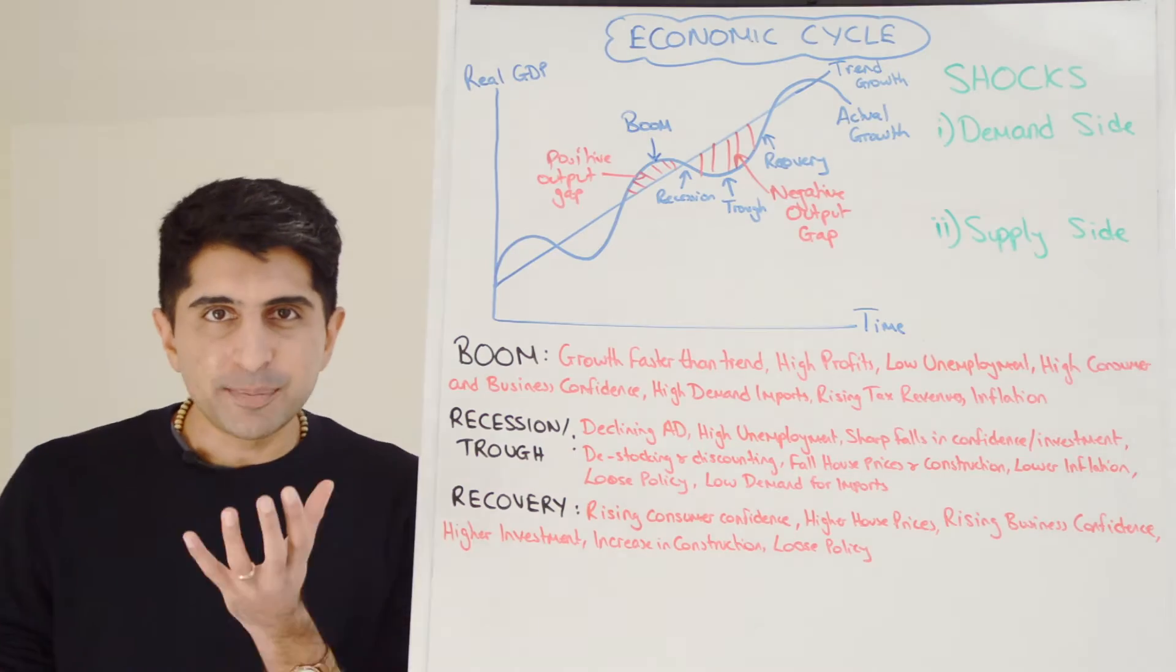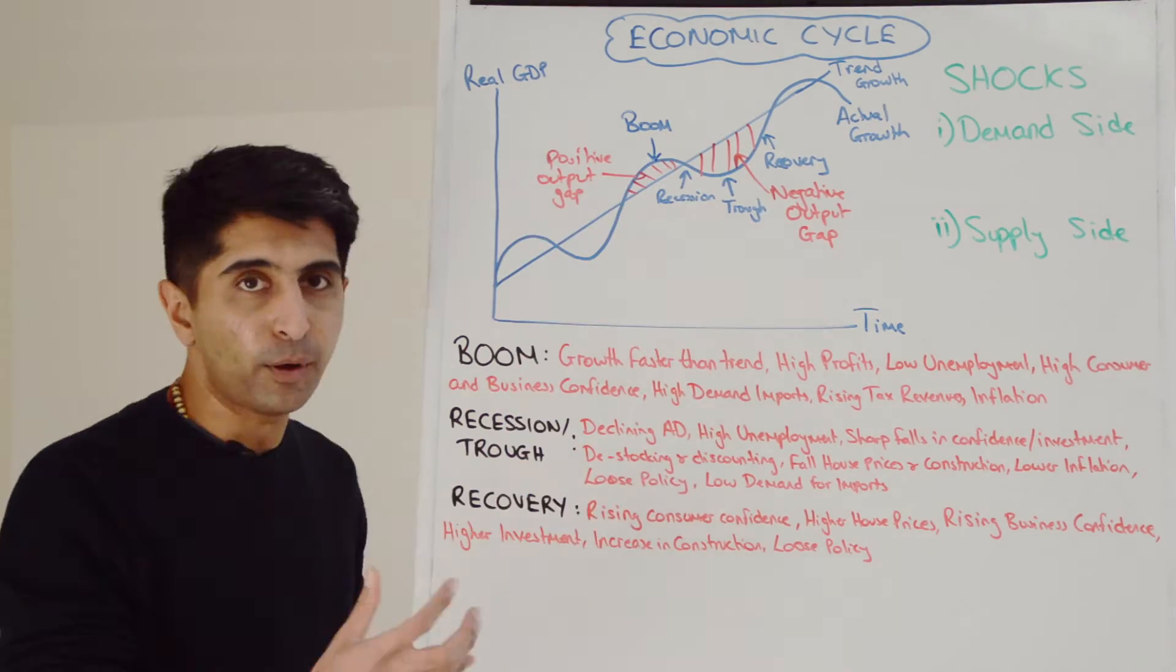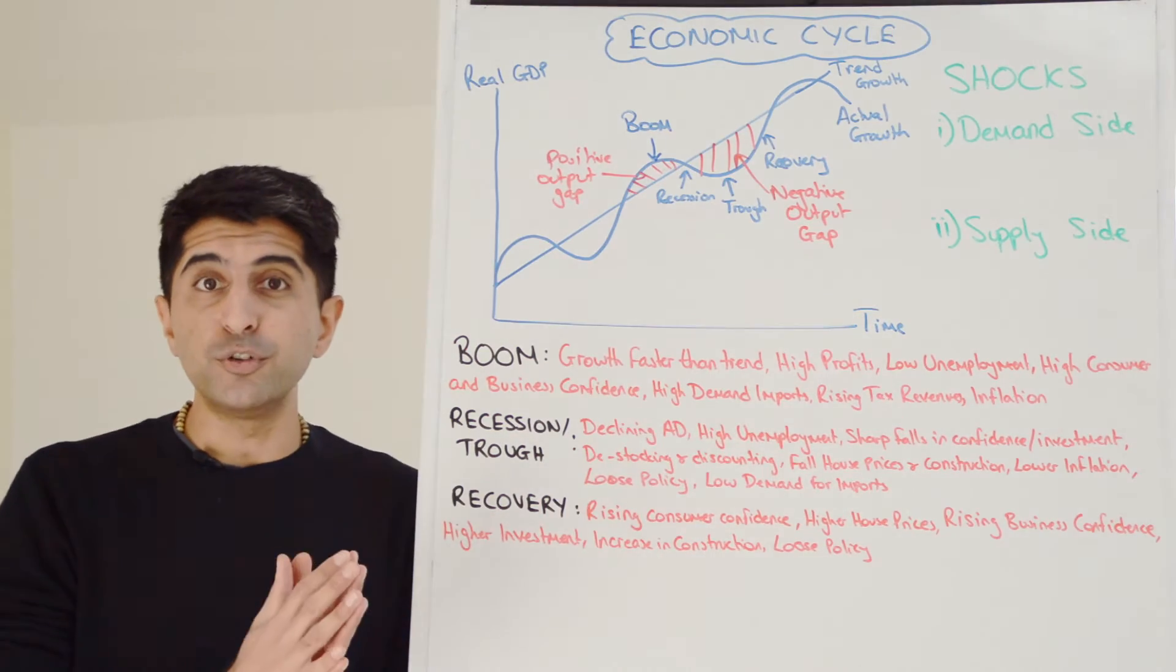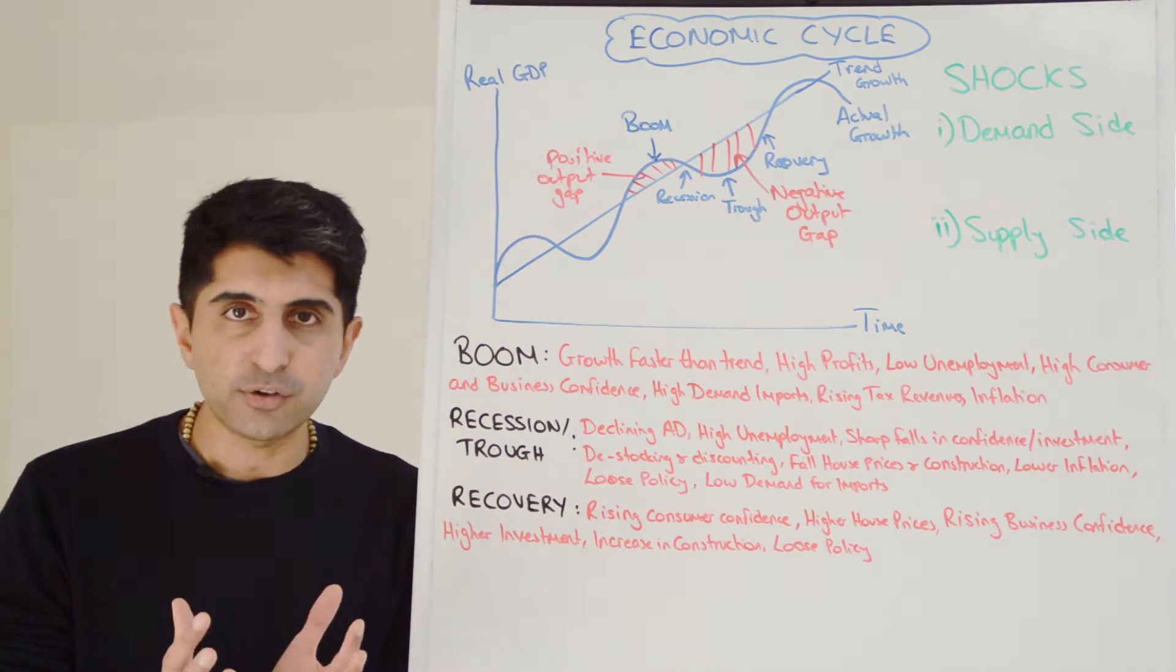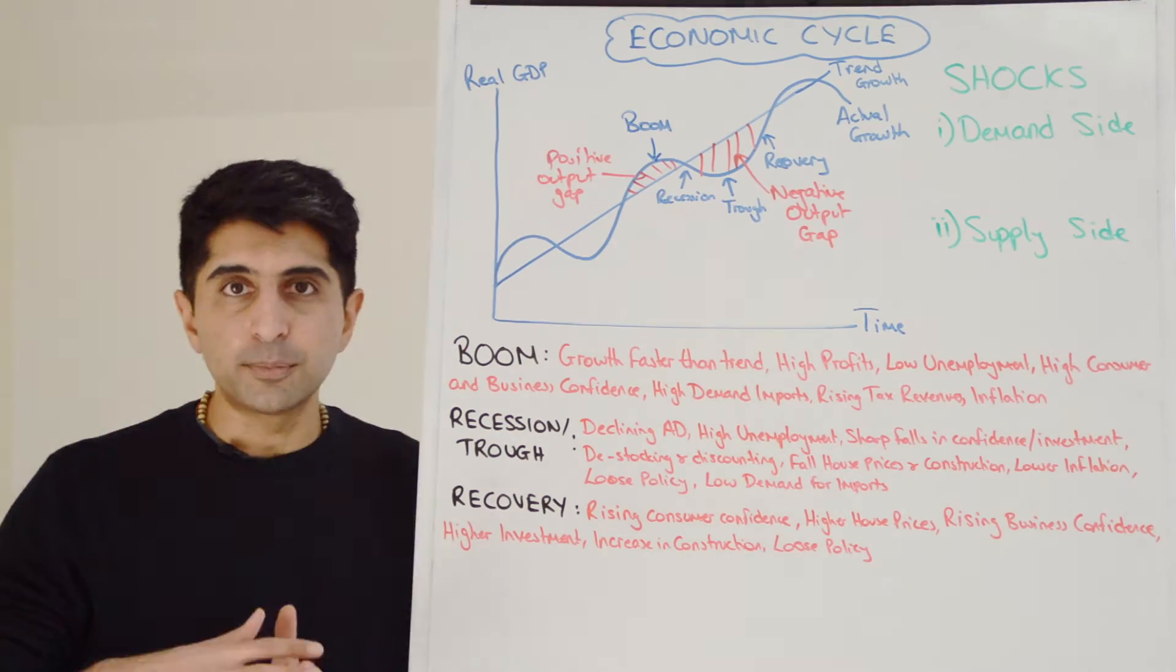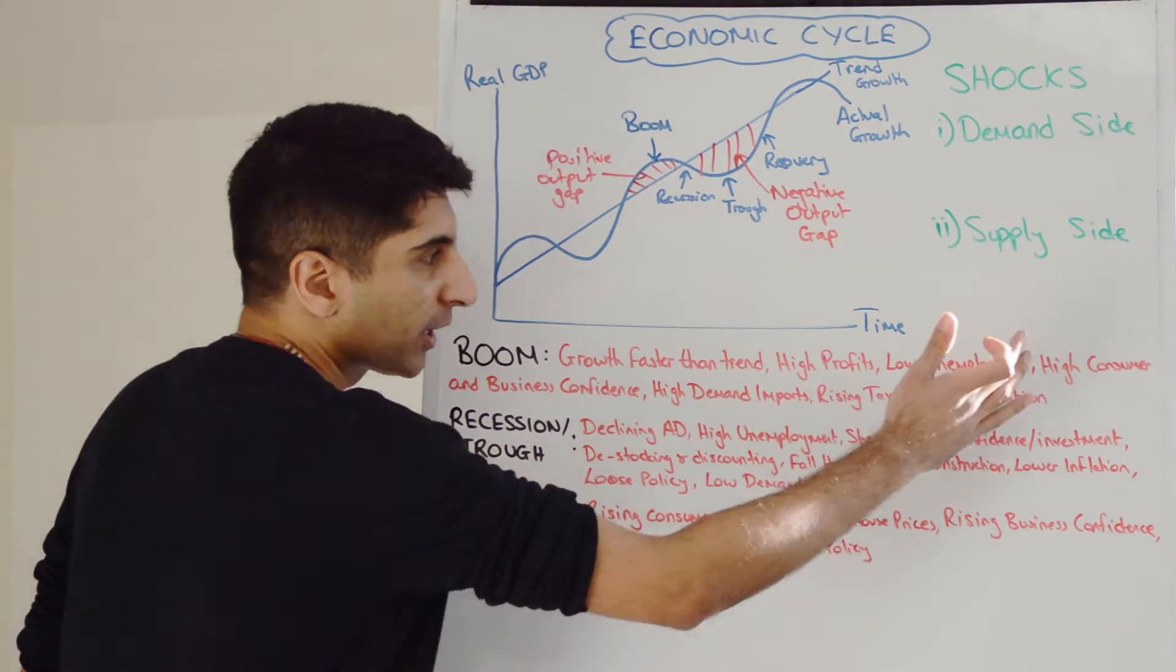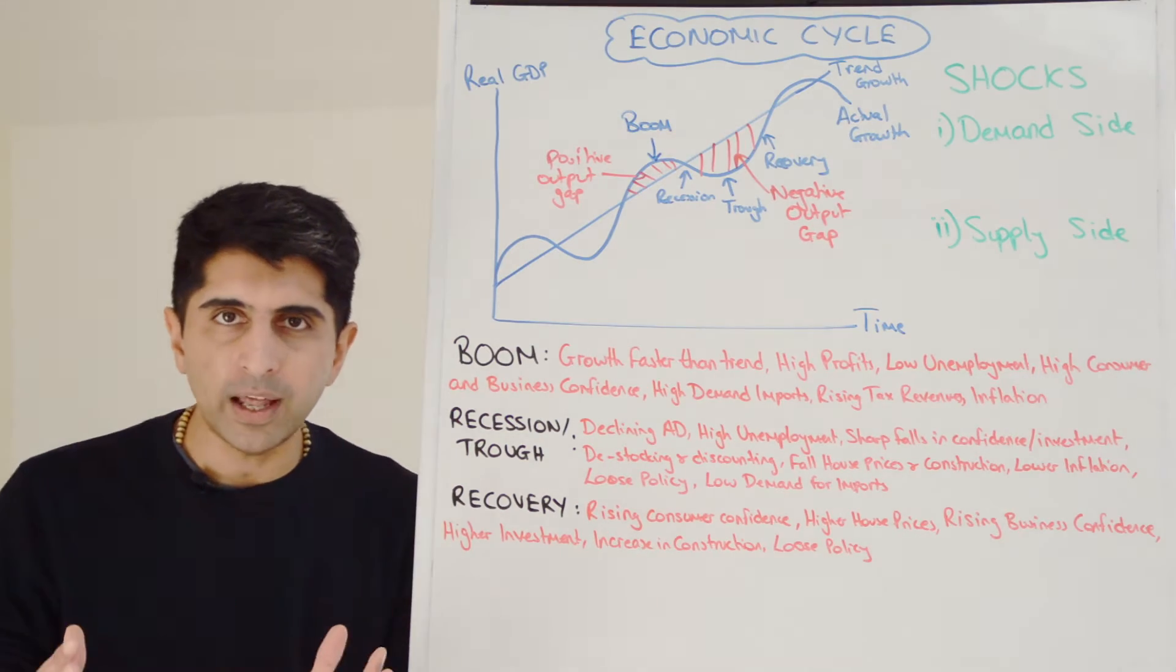In a boom, growth is going to be rampant with actual growth likely to be beyond potential growth with a positive output gap in the economy. And with that, firms are going to be producing a lot. You can imagine there being high construction activity, high manufacturing activity. Firms are producing a huge amount of goods and services and selling them easily with high profits. To produce that output, they need to employ workers, so unemployment is likely to be very low.